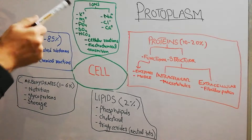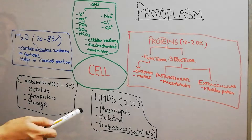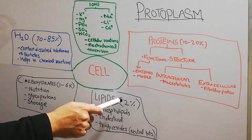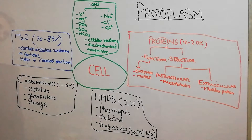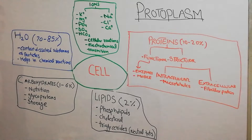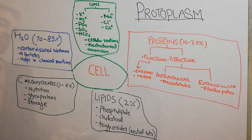After ions, we have lipids. Lipids are basically those substances which cannot be dissolved in water and they make about 2% of the cell structure. The important lipids in the cell are phospholipids and cholesterol. Apart from those, we also have triglycerides, which are neutral fats.